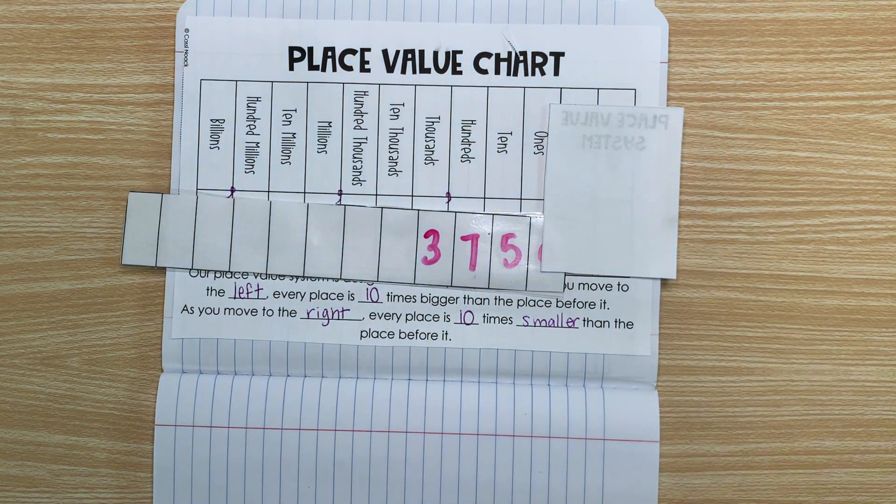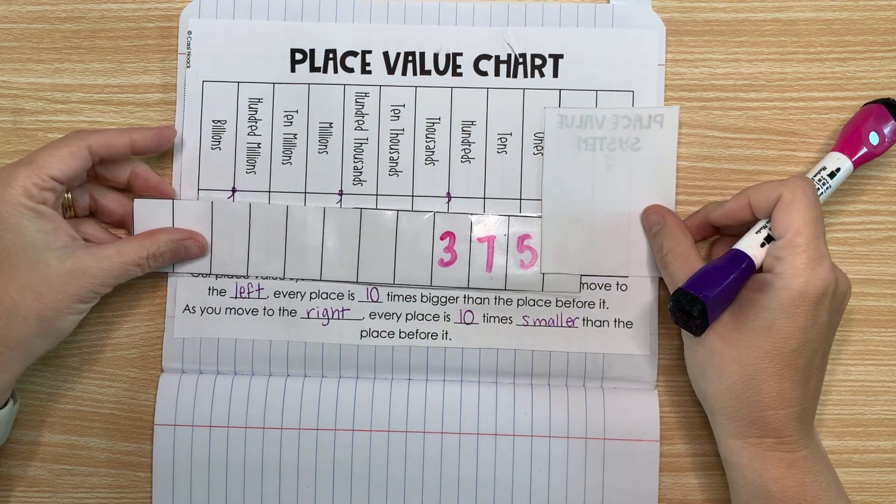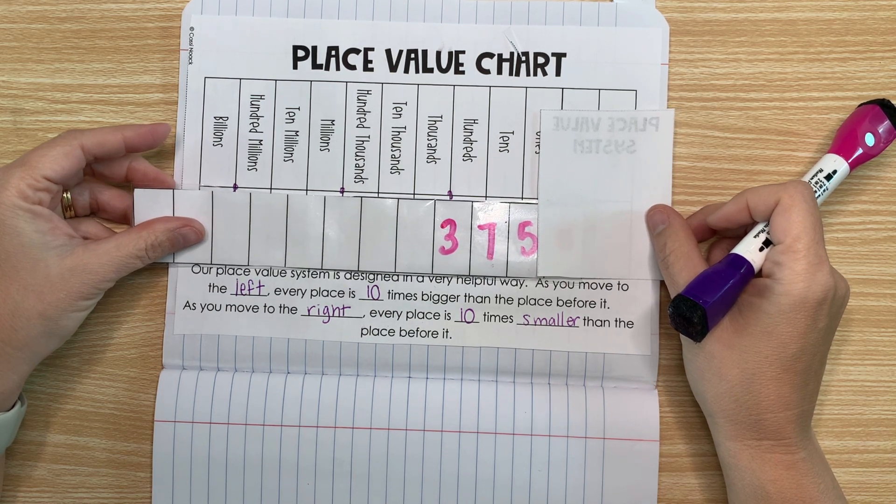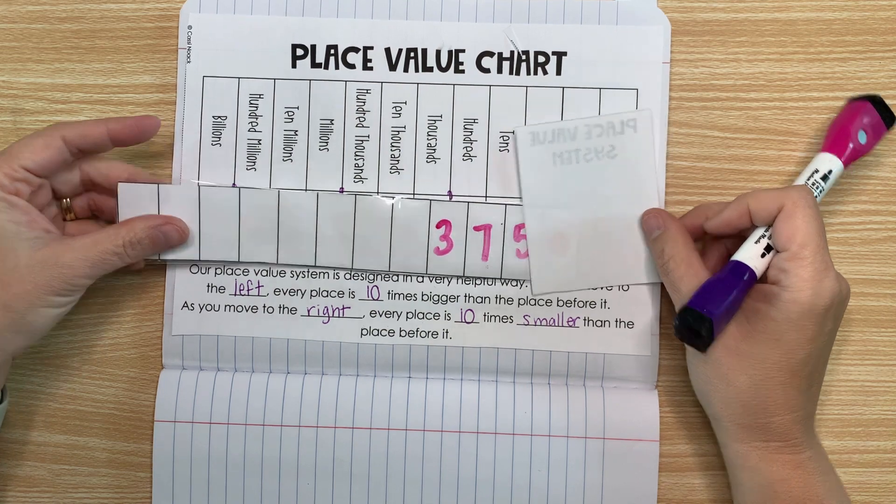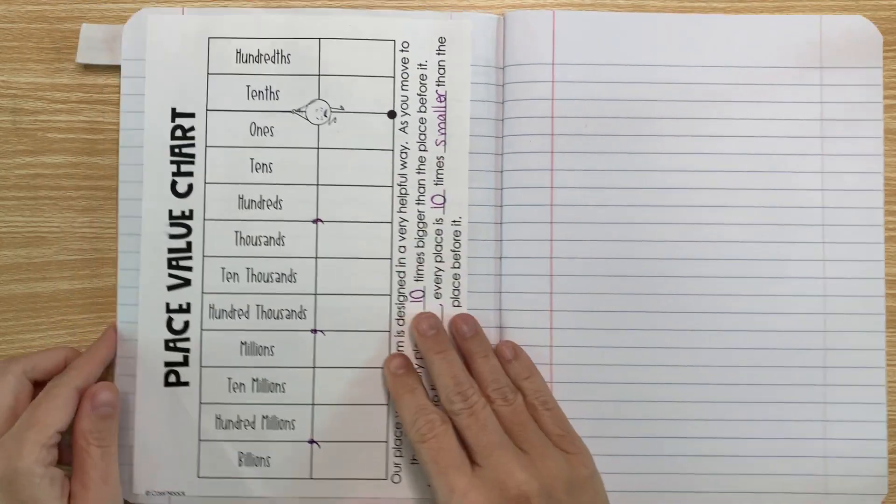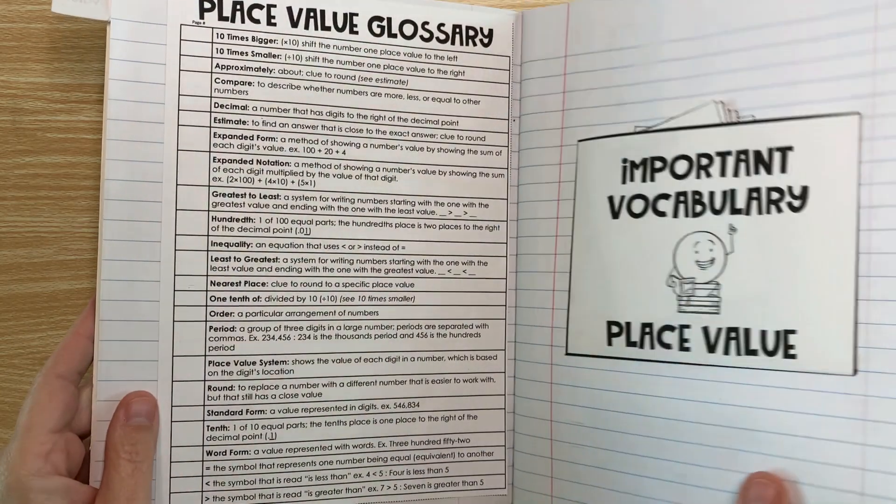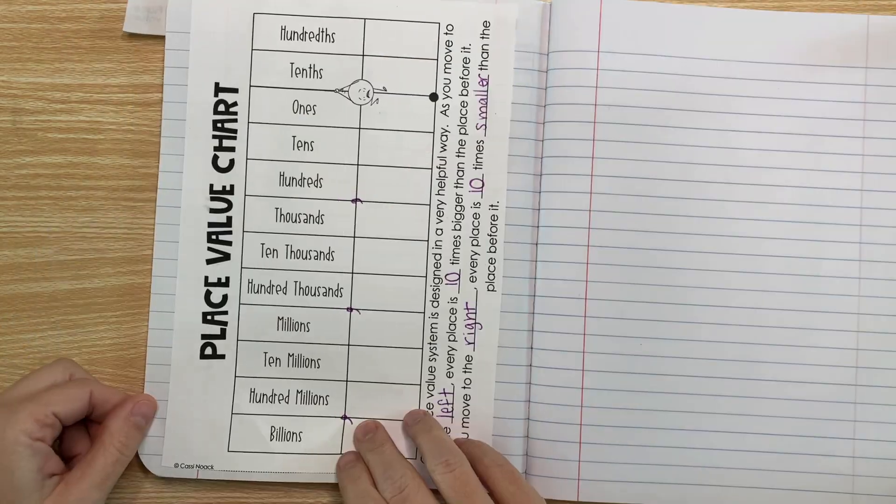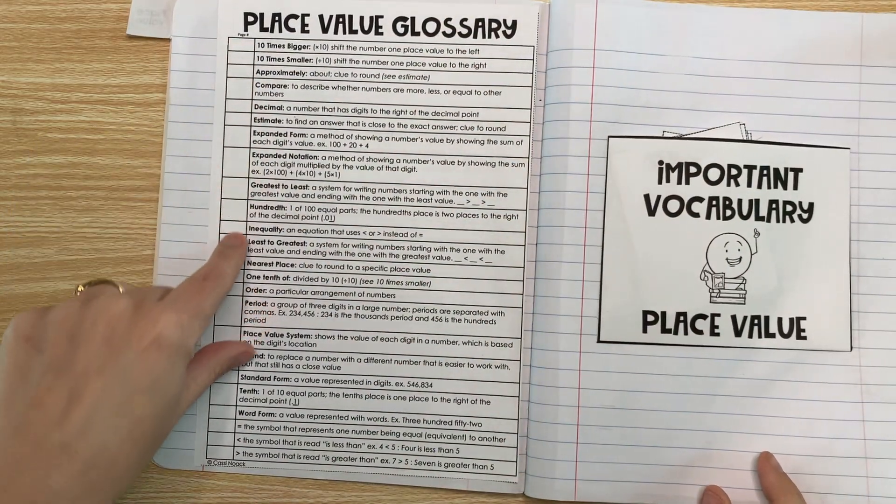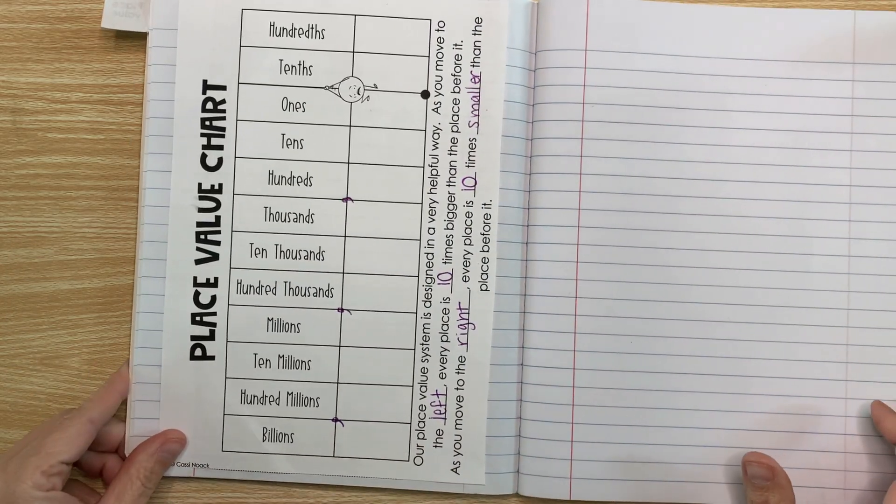So you will use this place value chart over and over as a reference as we keep on learning and adding to what we know. So if you need help with reading a number or understanding the value of a digit, just open up your place value chart here and then have a look. So the last thing we can do is add this to our table of contents. So you can number this page and you can go back to your place value glossary. And the things that we learned about today, you can write that page number next to the word that we learned about. All right, so tomorrow we'll add on a little bit more.